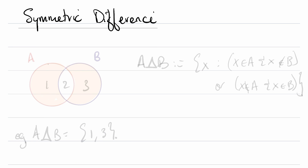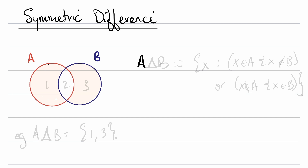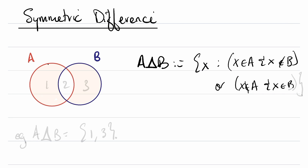You can also consider the symmetric difference. It's the set of objects x such that x is in A and x is not in B, or x is not in A and x is in B. Said otherwise, it's all the stuff in A but not in B, union all the stuff in B but not in A. In this particular example, that's going to be the stuff in A not in B union the stuff in B not in A — so the symmetric difference is {1, 3}. More on this later.